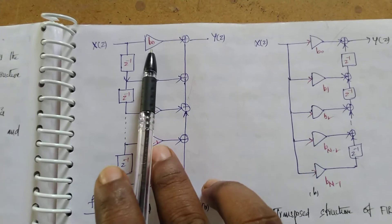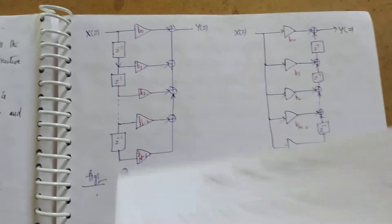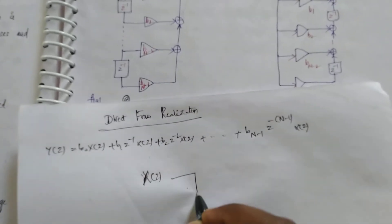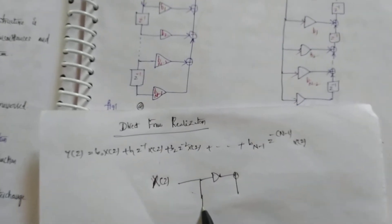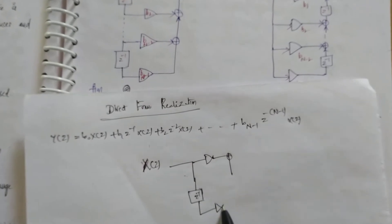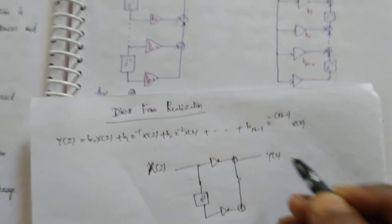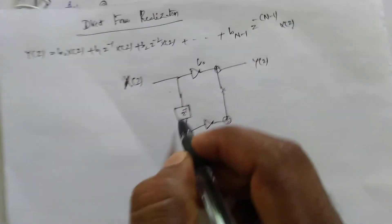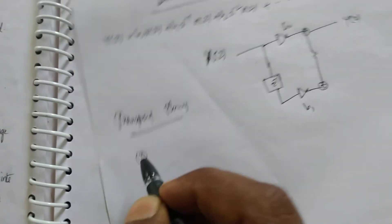The adder component replaces the pickoff point, and we also need to change the direction of b0. We can directly draw the transposed structure from the equation. Here x(z) has some b0 value, then an adder component, then a delay, and then a multiplier. So this is nothing but b0, delay component, and b1.